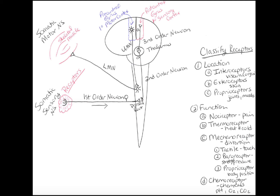Several of the cranial nerves have motor commands going out to muscles, and several of them have sensory neurons coming in. Every single spinal nerve has sensory information coming in and motor information coming out. So we're looking at all of those cranial nerves and all of those spinal nerves.